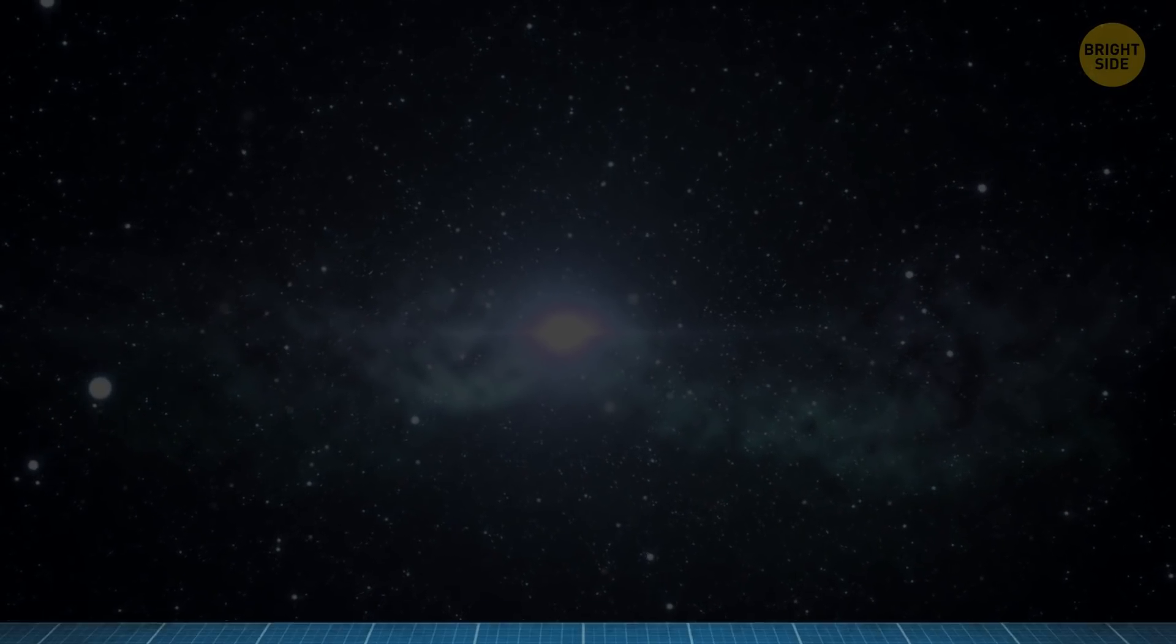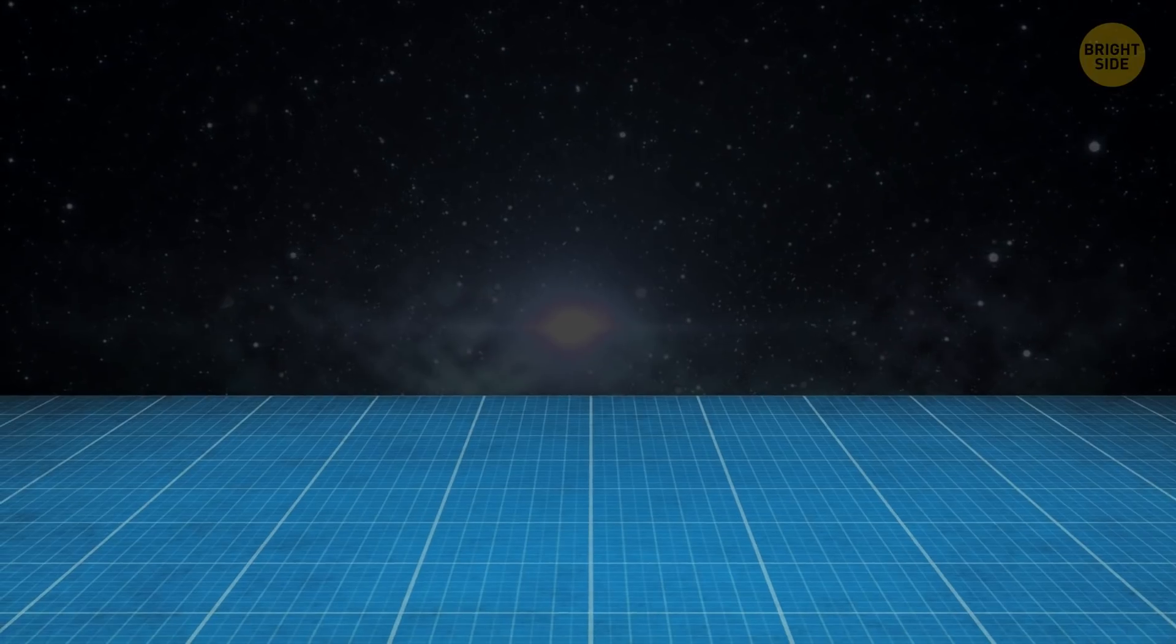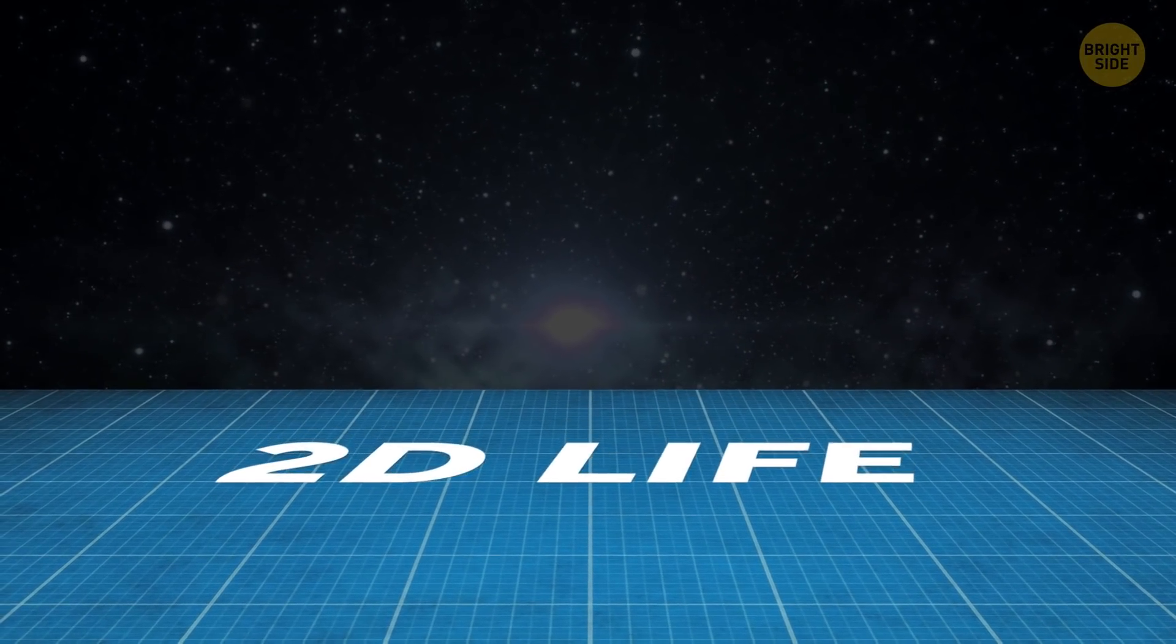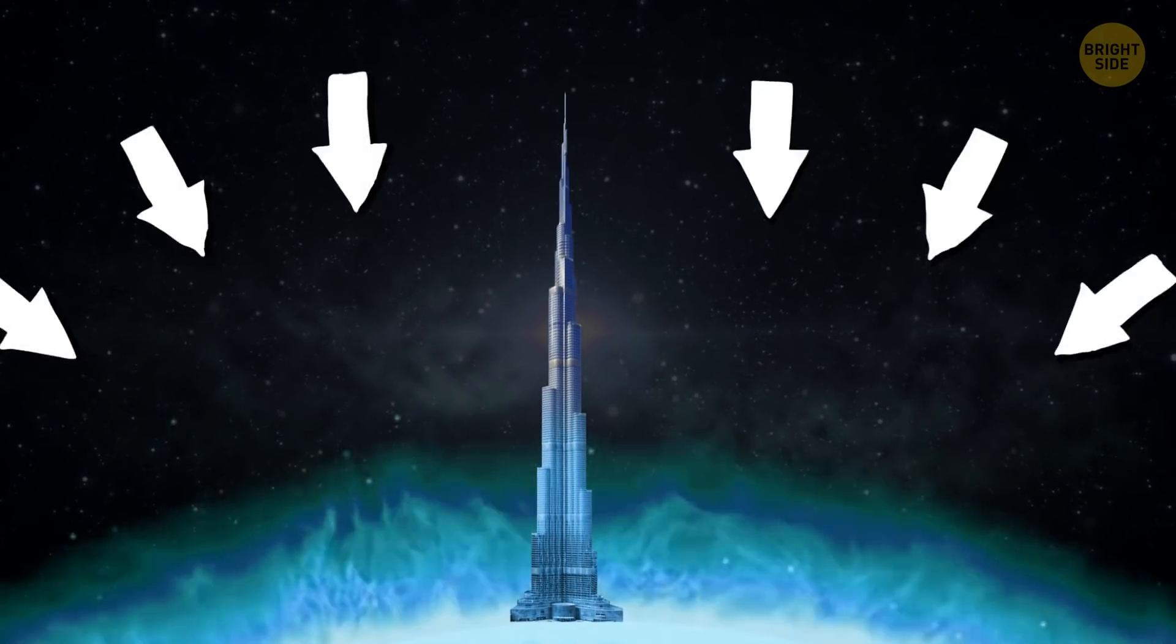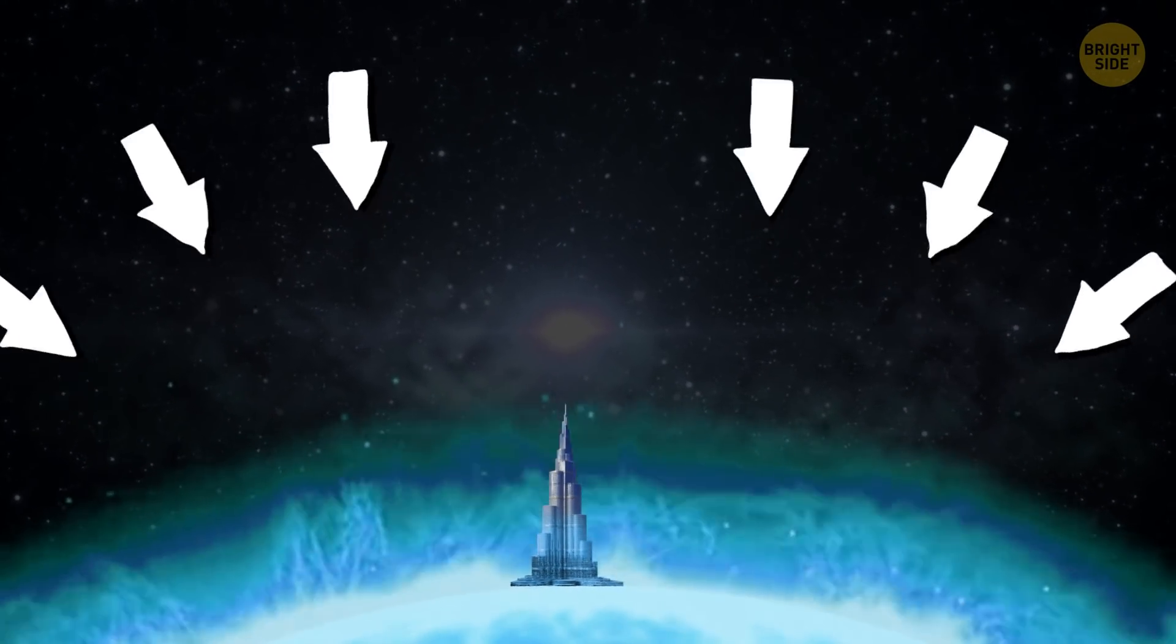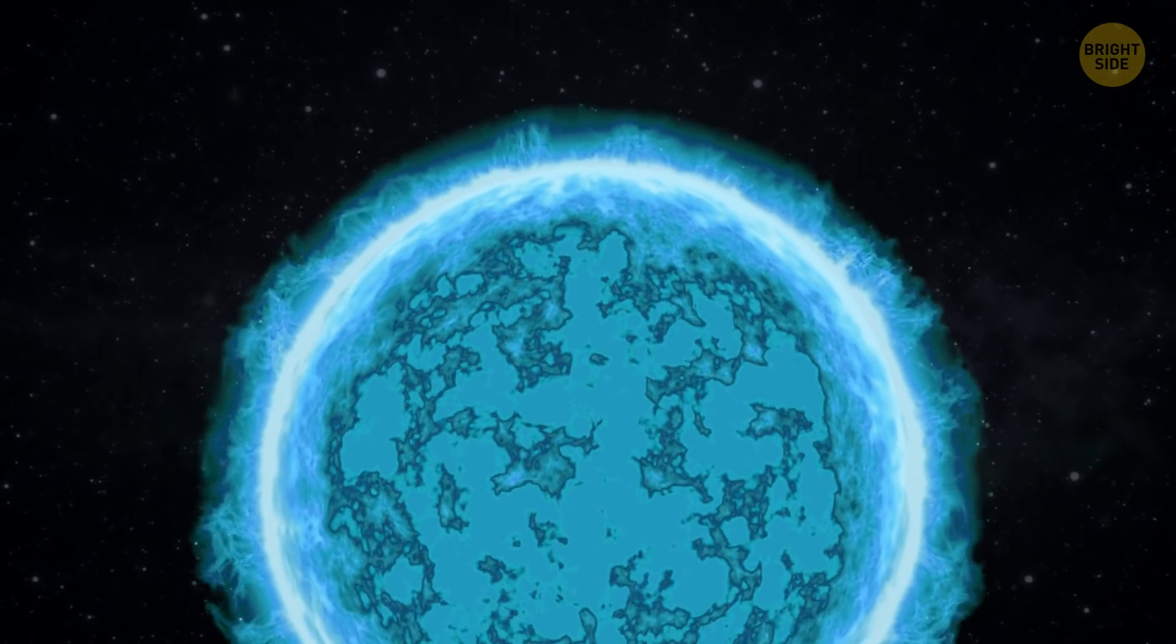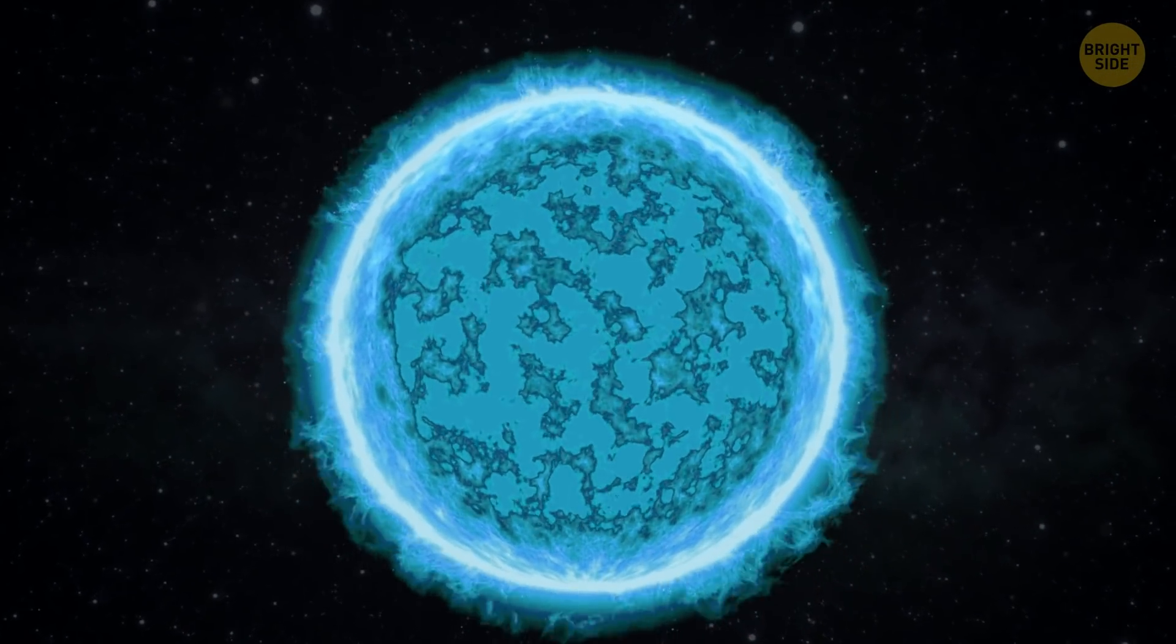But you know one of the coolest things about neutron stars? If there was life on one of them, it'd be two-dimensional, like a comic book. Their gravity is powerful enough to literally flatten anything on their surface. And if they had an atmosphere, it wouldn't stretch up any further than a foot or so above the surface of the star.